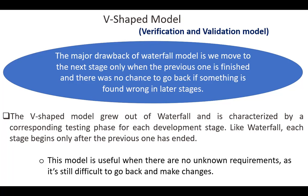Hello everyone. Today our topic is the V-shaped model, also referred to as the verification and validation model. The major drawback of the Waterfall model is we move to the next stage only when the previous one is finished, and there was no chance to go back if something is found wrong in later stages. The V-shaped model grew out of Waterfall and is characterized by a corresponding testing phase for each development stage. Like Waterfall, each stage begins only after the previous one has ended.